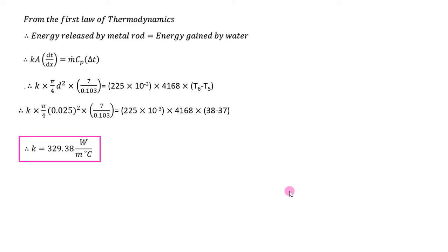The mass flow rate is 2.25 × 10⁻³ kg/s — converting liters per second to kg/s using water density of 1000 kg/m³. The specific heat of water Cp = 4.18 kJ/kg·K (standard value). The temperature difference of water is T6 − T5 = 38 − 37 = 1°C. Substituting all values, we get thermal conductivity K = 329.38 W/m°C.